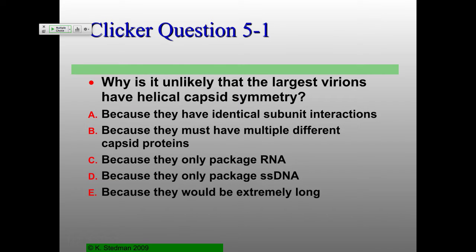Clicker question number one for today: Why is it unlikely that the largest virions have helical capsid symmetry? Because they have identical subunit interactions, must have multiple different capsid proteins, only package RNA, only package single-stranded DNA, or they would be extremely long.